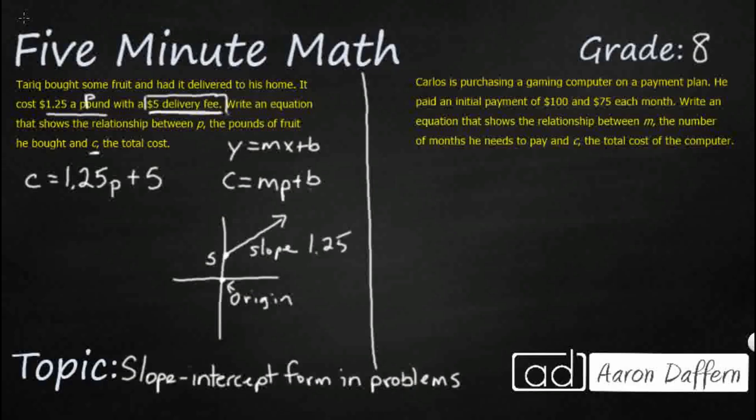So that's what it would look like. There would be something like this 125 P plus that $5 delivery fee. Let's see what it looks like over here on this other problem.